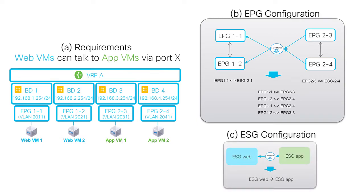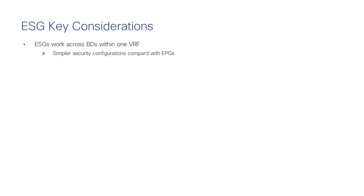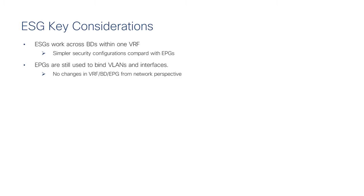With ESGs, to achieve the same result you need just one single contract — a much simpler configuration that makes usability far better than with EPGs. ESGs work across BDs within a single VRF. You still need EPGs to map traffic and VLANs to BDs, and EPGs are used primarily as a way to map workloads to BDs and into the VRF.